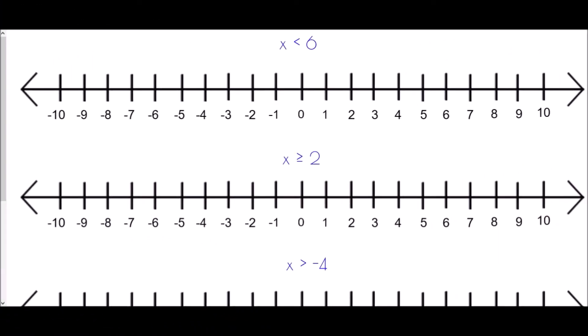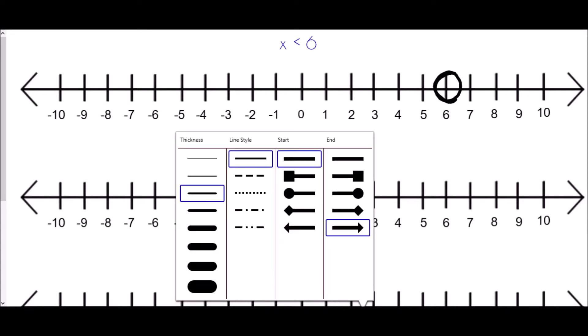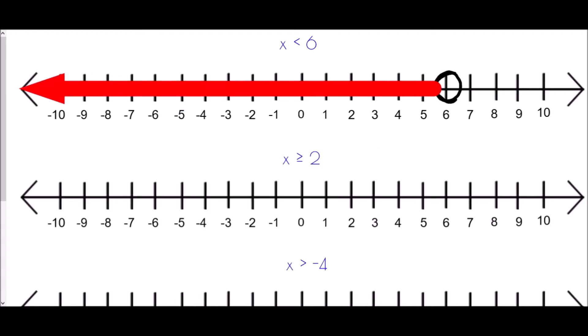Now we'll look at how to represent these inequalities on a number line. In every case, the number used within the inequality is the most important starting point. For example, with x less than six, we draw a circle at six. The direction the inequality arrow points is helpful — we draw an arrow going off to the left to show that x is less than six.